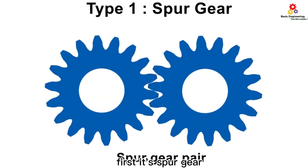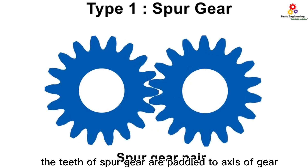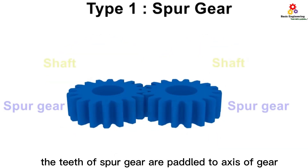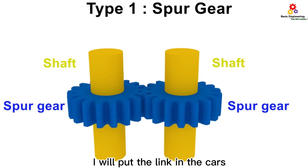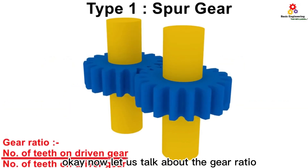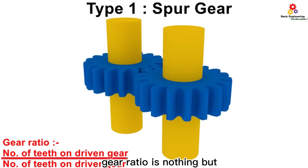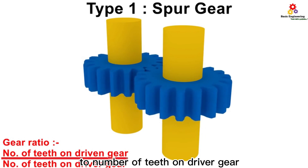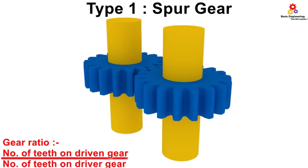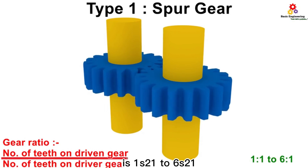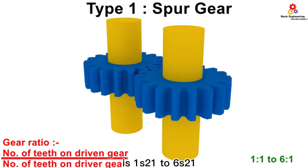First is spur gear. The teeth of spur gear are parallel to the axis of the gear. The gear ratio is nothing but the ratio of number of teeth on driven gear to number of teeth on driver gear. Generally, the gear ratio of spur gear is 1:1 to 6:1.